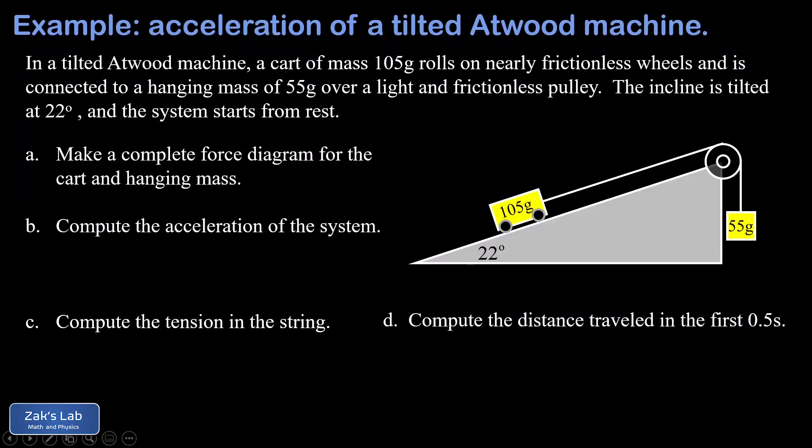In this video we're looking at a tilted Atwood machine with an incline angle of 22 degrees. There's a cart sitting on that with basically frictionless wheels, so we don't have to worry about friction in the problem. The mass of that cart is 105 grams, so we'll need to convert that to kilograms at some point.